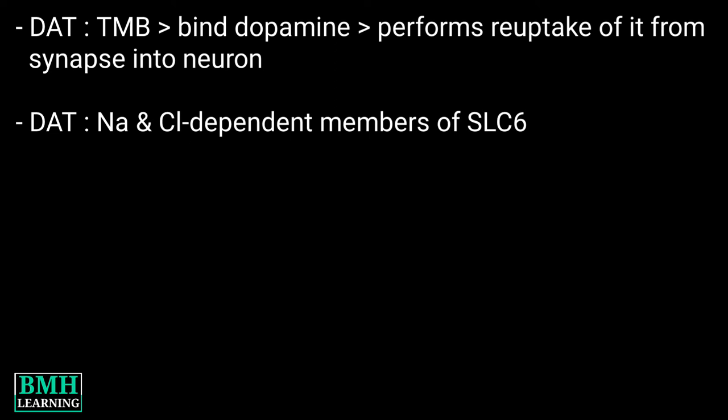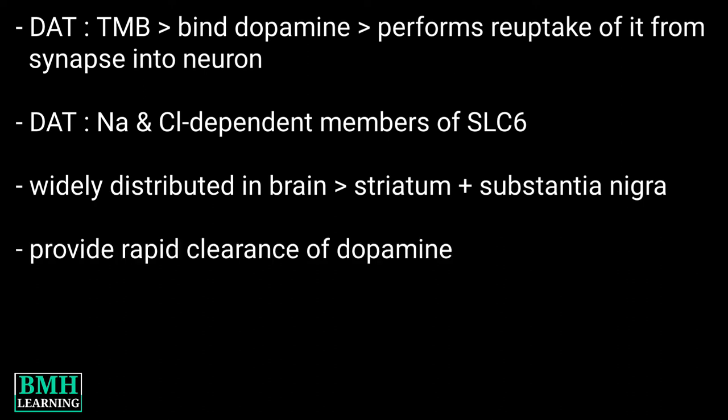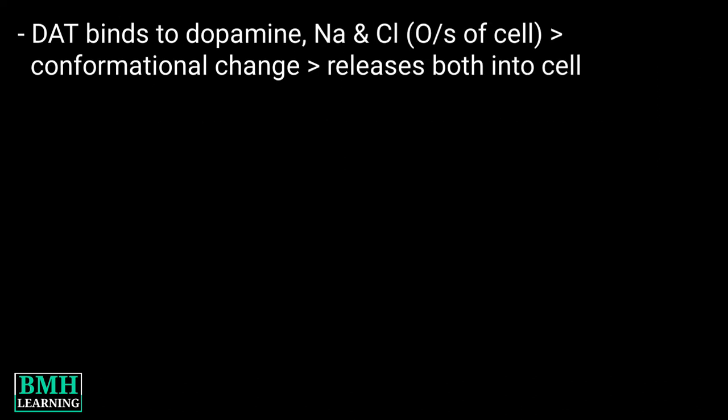They are members of the solute carrier family six and are widely distributed throughout the brain in areas of dopaminergic activity, including the striatum and substantia nigra. They provide rapid clearance of dopamine.